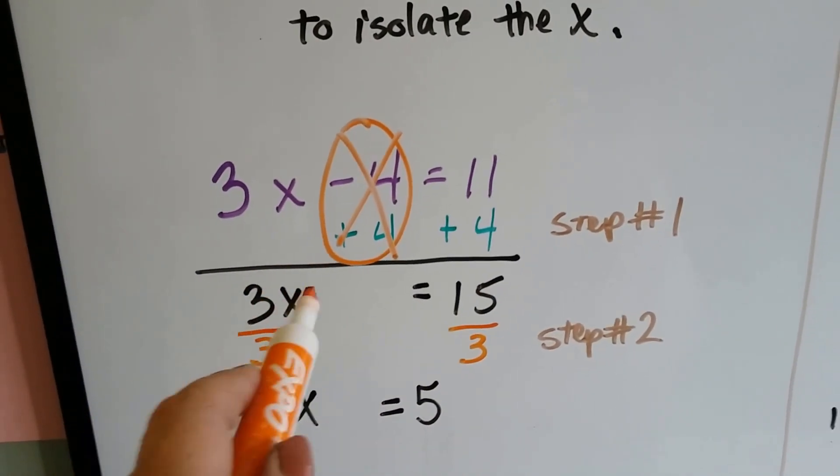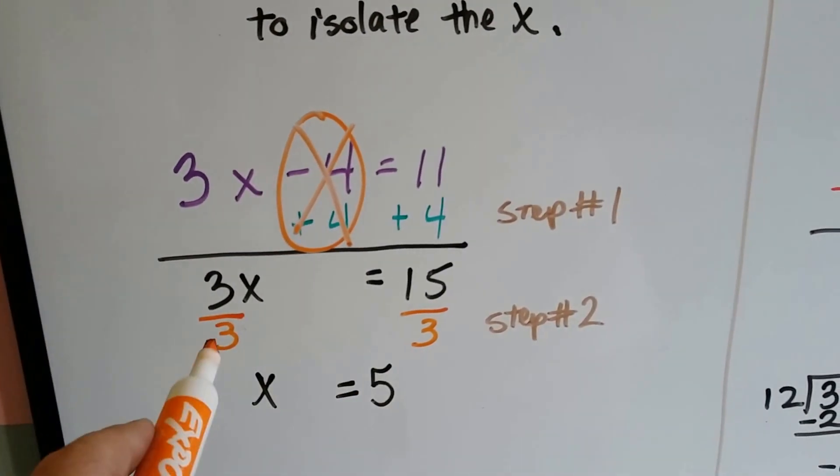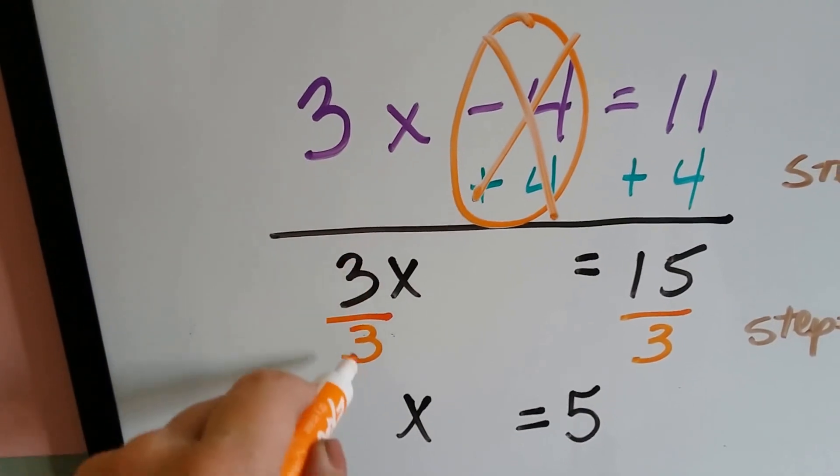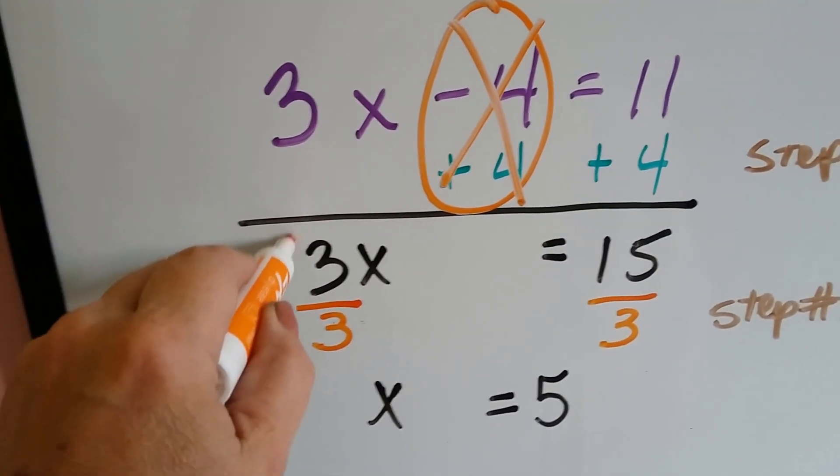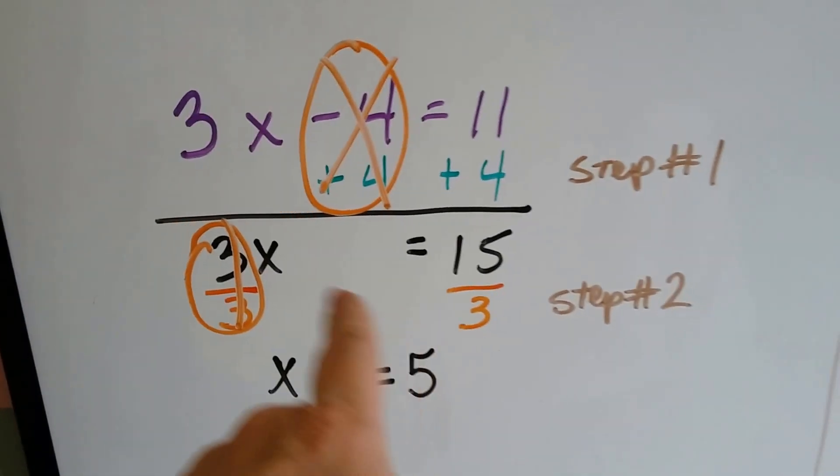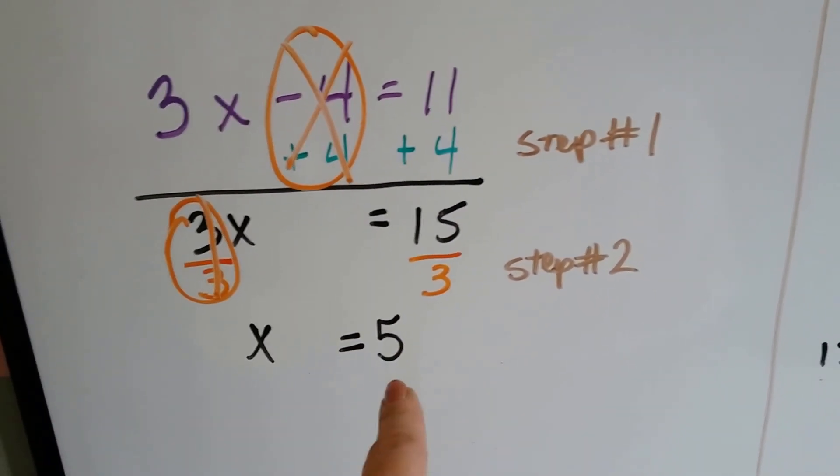Well, 3x means 3 times x, and the inverse operation of multiplication is division, so we divide both sides by 3. 3 divided by 3 creates a 1, so that's 1x. 15 divided by 3 is 5, so x equals 5.